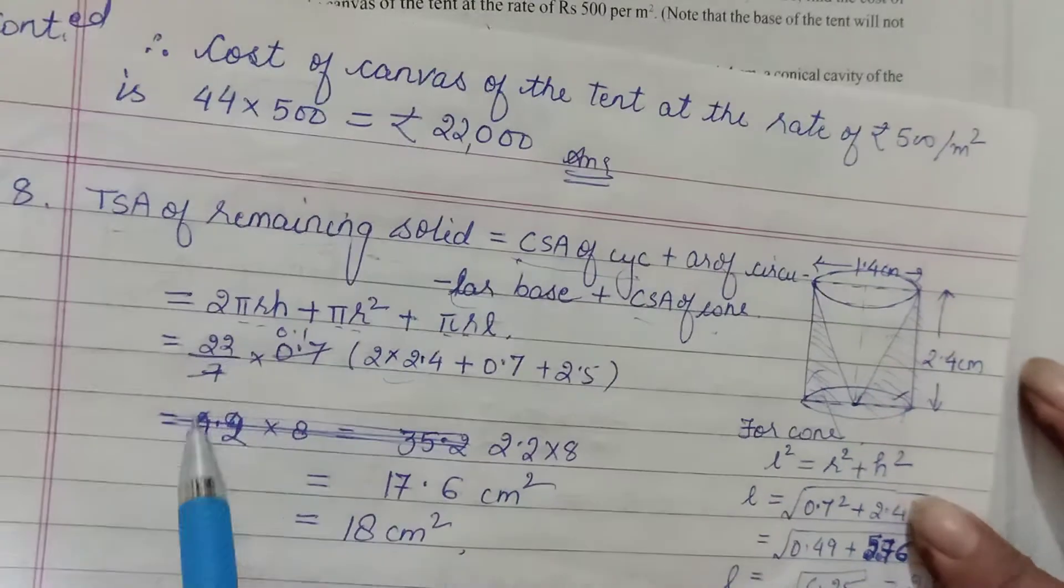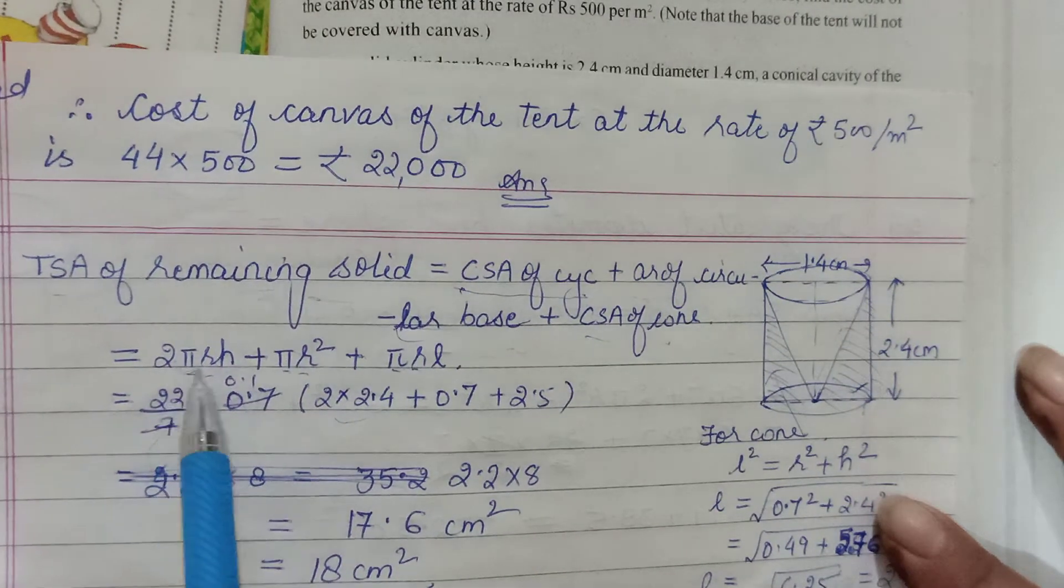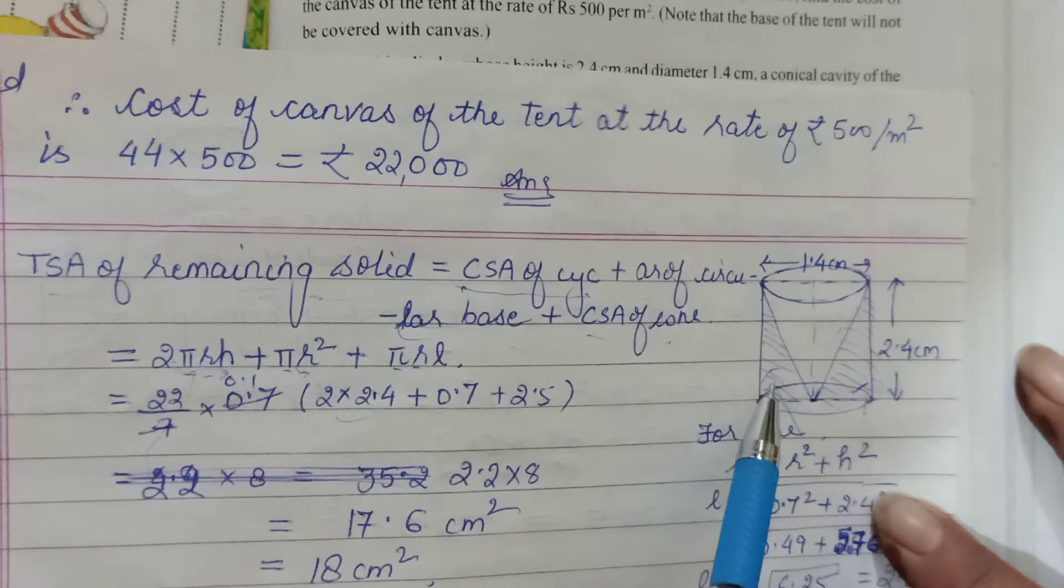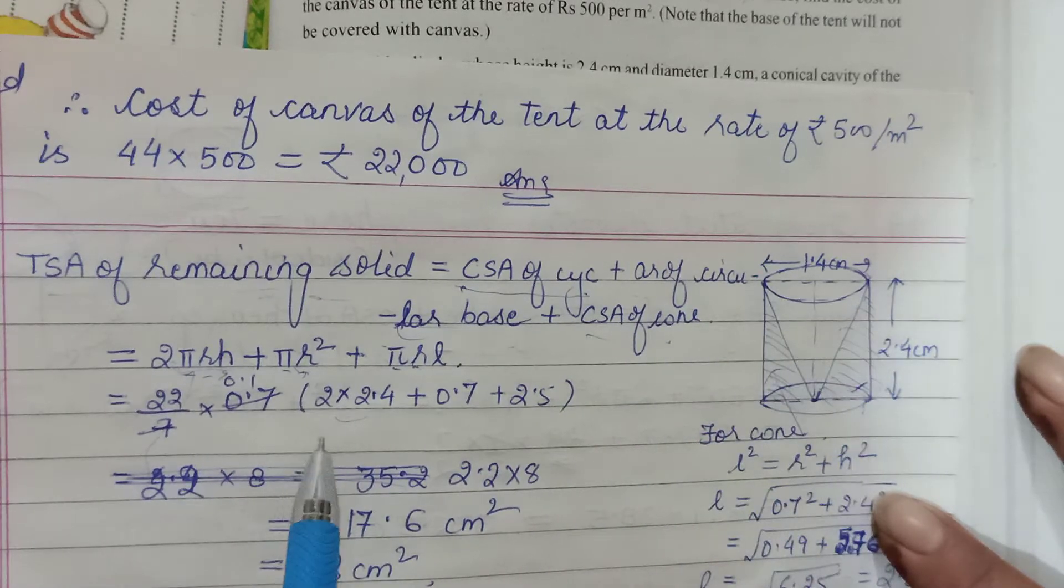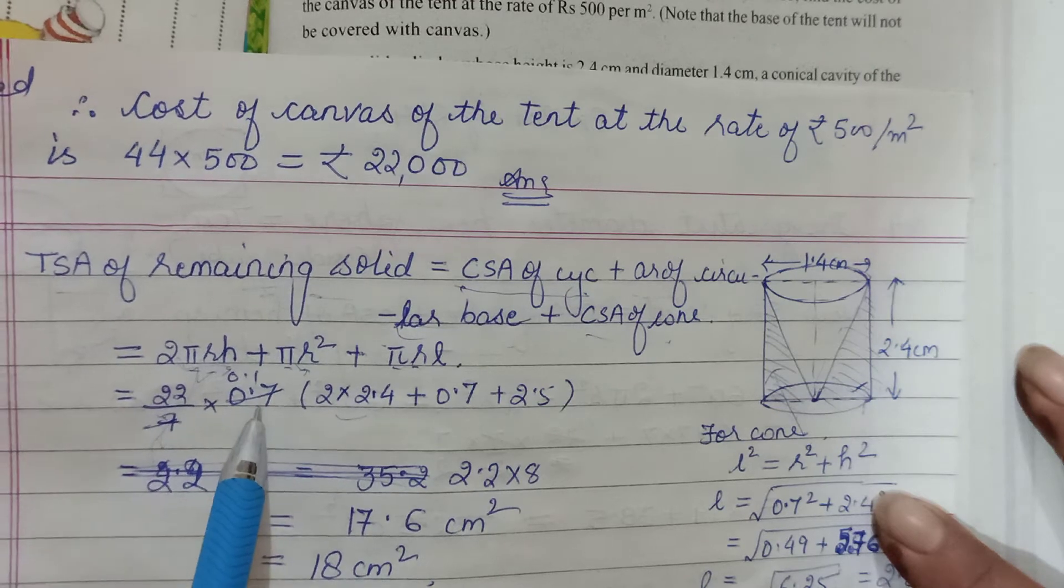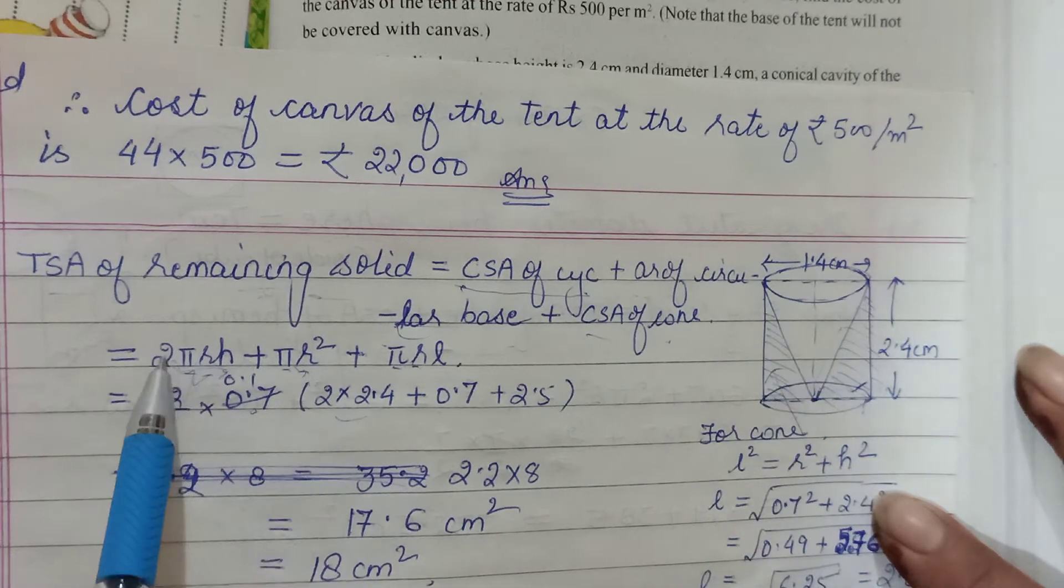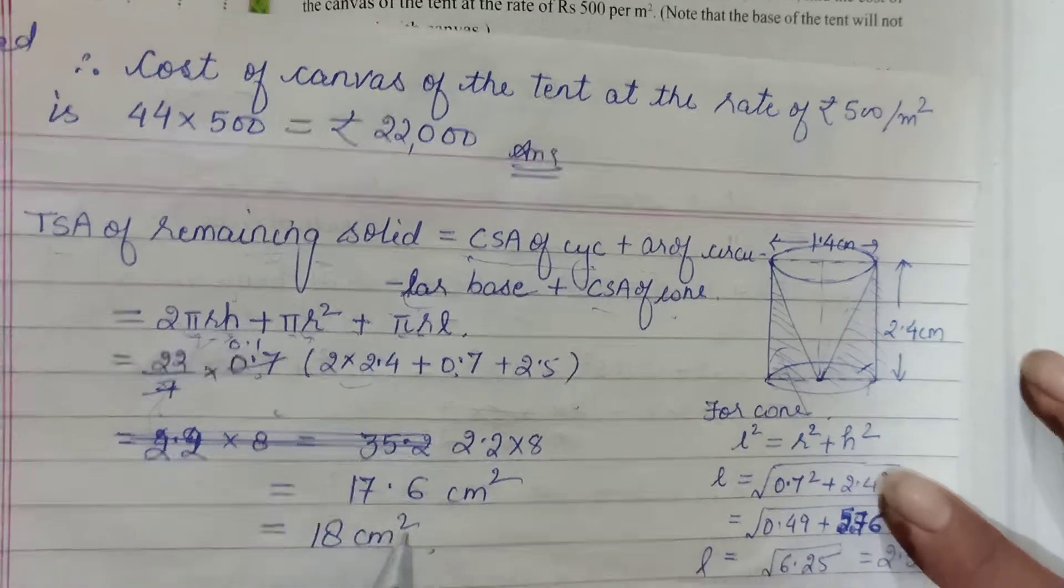All this will be included in TSA. So 2πrh is for this CSA of cylinder, πr² base area, and πrl inside area that you will be able to see. Again, π and r can be taken common from here. π is 22/7, r would become 0.7 - this was your diameter - then 2 into h, one r here, and l here. Sum this up.